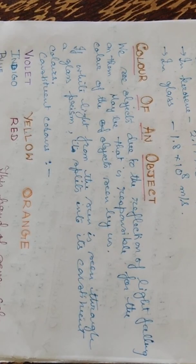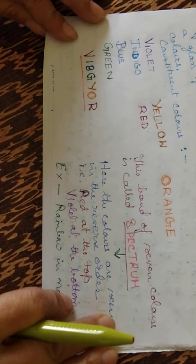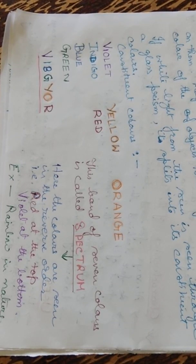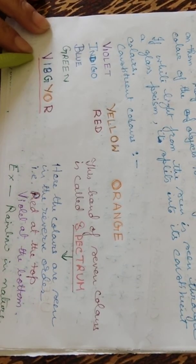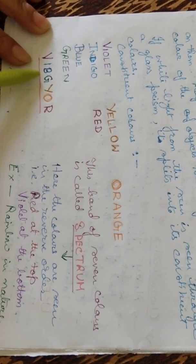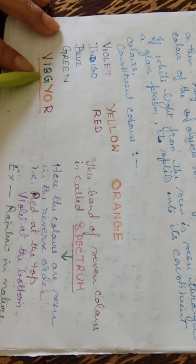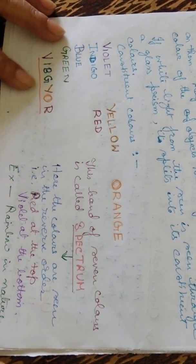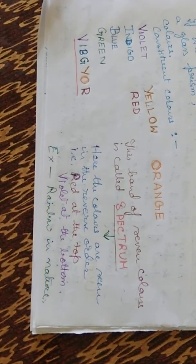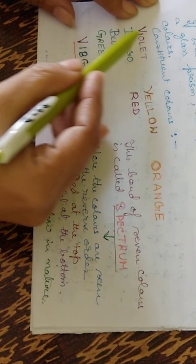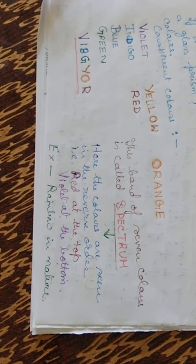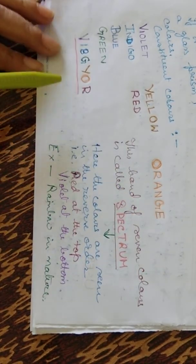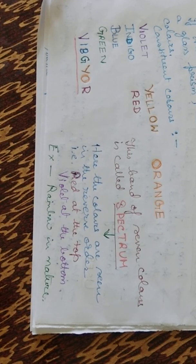The constituent colors can be remembered as VIBGYOR: V for violet, I for indigo, B for blue, G for green, Y for yellow, O for orange, and R for red. In the spectrum, the colors are seen in reverse order — red will be at the top and violet will be at the bottom. An example of this spectrum is the rainbow, which will be discussed in a later section.